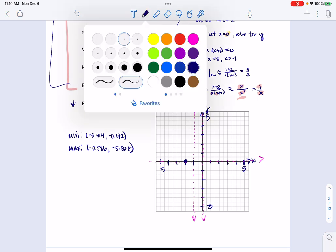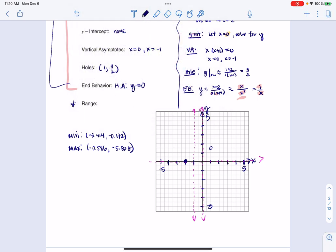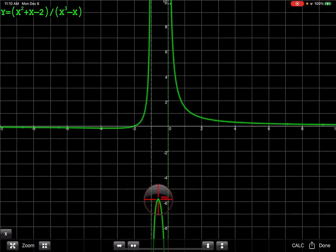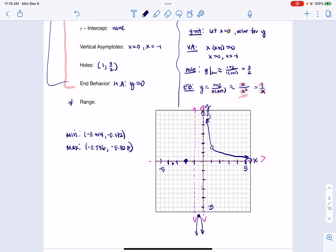I have a hole at 1 and then 3 halves. So there's a hole there. I have a min at negative 3.414 and then negative 0.172. So somewhere around there. And then I have a max at negative 0.586 and then negative 5.828, which would actually be down here. I didn't get it all in. That's fine. Now we know this part goes like this. We know this part here goes up like so. This one came down. And if you're wondering where I'm getting that, let me just remind us that if I look at my graph, that is the shape of my graph. So I'm just copying that onto my paper or onto my iPad, I should say. And then this one is going to go up. It's going to hit the min there and then go to the horizontal asymptote.